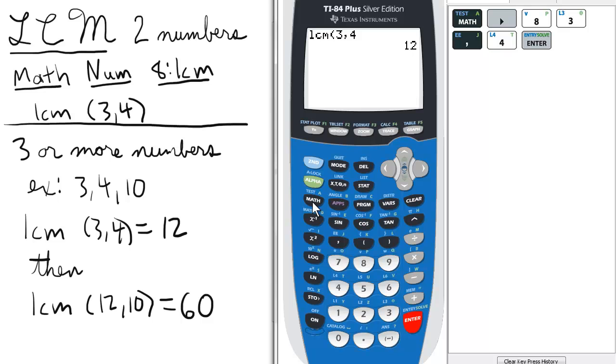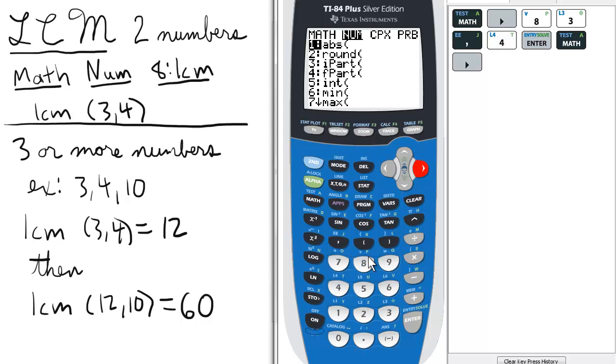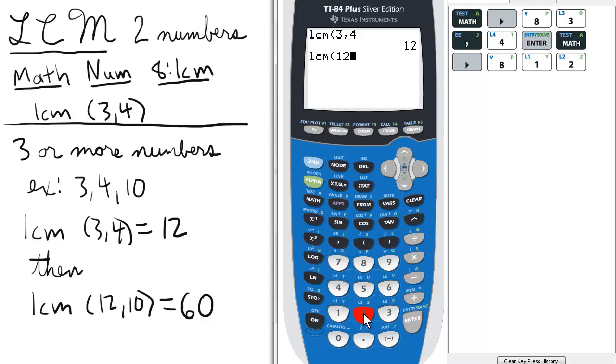So we're going to access the LCM function again by pressing Math, scrolling over to Num, and selecting 8 for LCM. And then we enter 12, which is the LCM of the first two numbers, and then comma, and then 10.